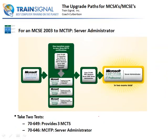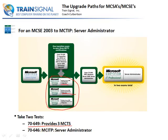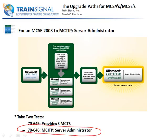Let's talk about MCSEs. If you're an MCSE 2003 and you want to go over to the Server 2008 Server Administrator side, you only need to take two tests. You need to take 649, which is actually going to provide you with three Microsoft Certified Technology Specialist certifications: Active Directory, Network Infrastructure, and Applications Infrastructure. If you're gunning for that exam, a lot of material in this Applications Infrastructure course will actually get you much of the information you need. Then you'll still need to take the pro-level 7646.